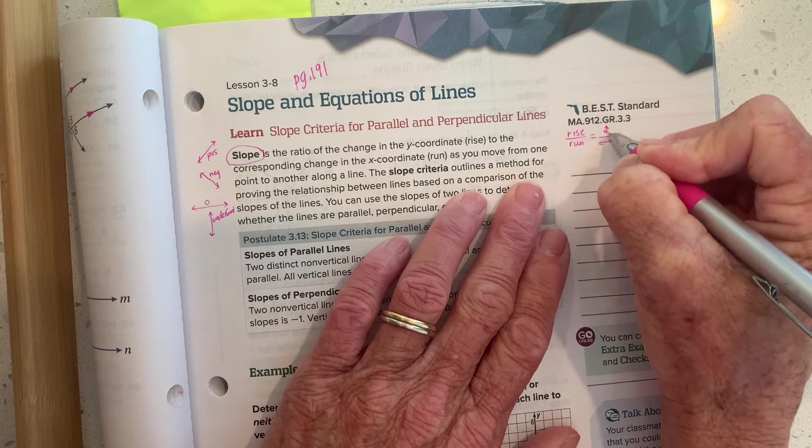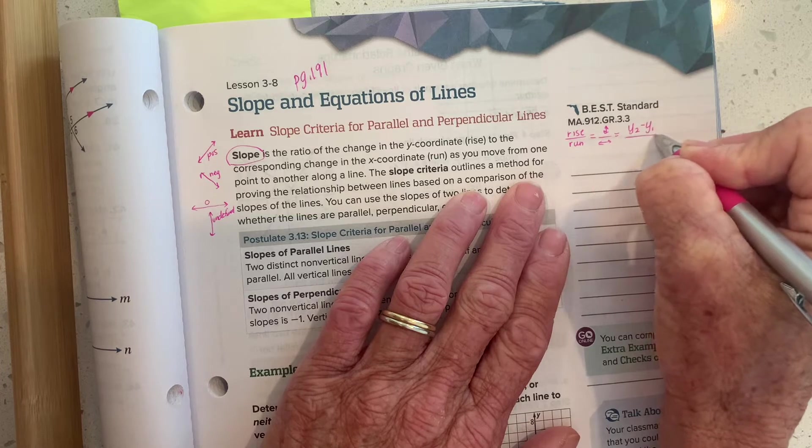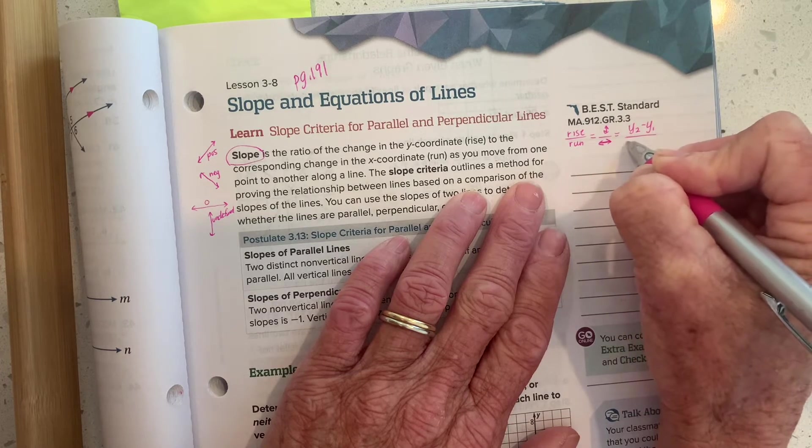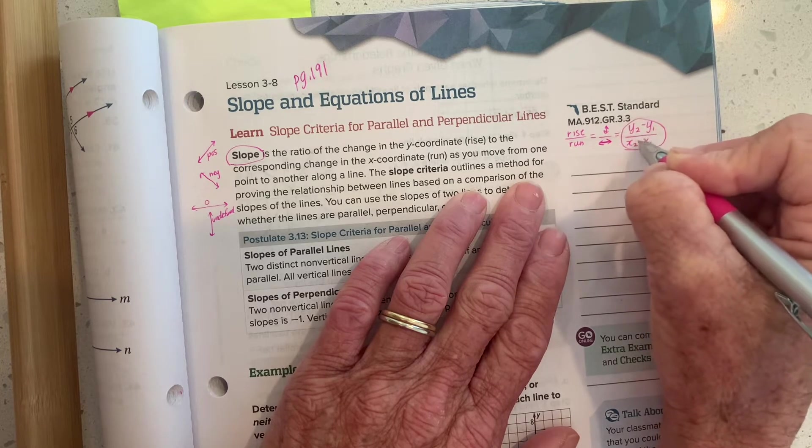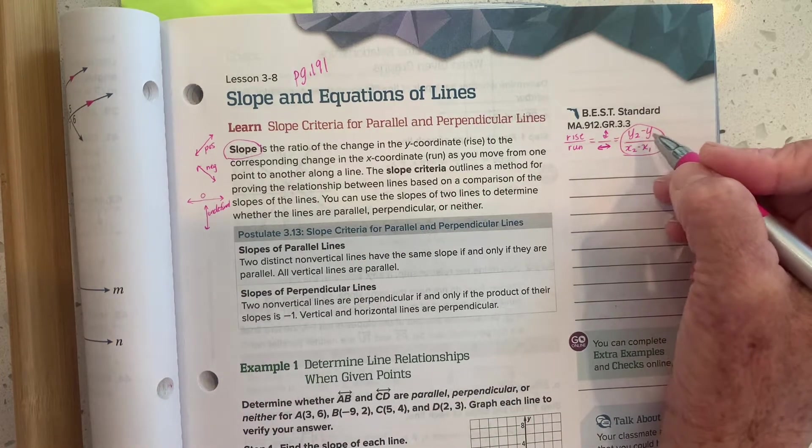Well, the vertical change, that's the y-axis, so that's the difference in our y's, y sub two minus y sub one, and this would be our horizontal axis, which is x, so that would be the difference in our x's, and that's the formal formula for finding slope.